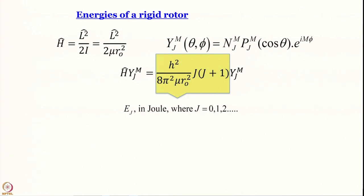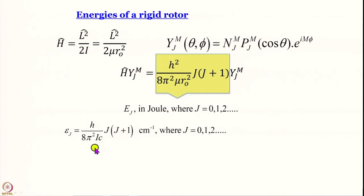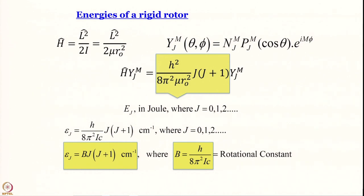Spectroscopists generally do not want to work in joules — they prefer wavenumbers in centimeter inverse, especially in rotational spectroscopy. So we convert: ε_J = h/(8π²Ic) × J(J+1), which is in cm⁻¹. This is simply written as ε_J = B·J(J+1) cm⁻¹, where B = h/(8π²Ic) is called the rotational constant.